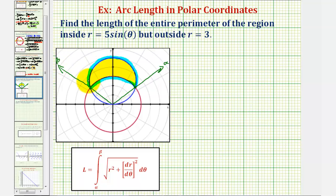Notice how this piece of the perimeter will be an arc length from r equals five sine theta, and this length will be an arc length from r equals three. So our integral will actually have two square roots to find the length of the entire perimeter. Let's begin by determining alpha and beta, which will give us the limits of integration.